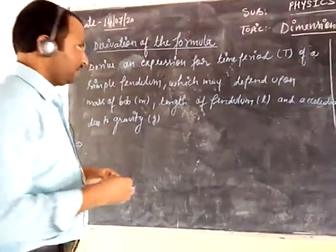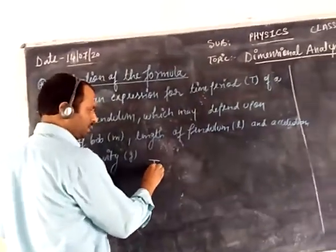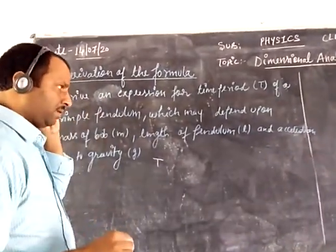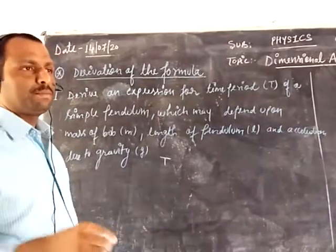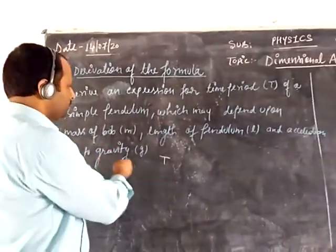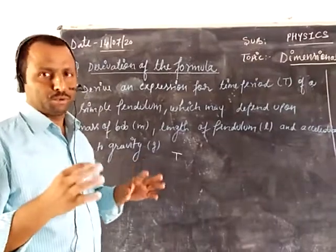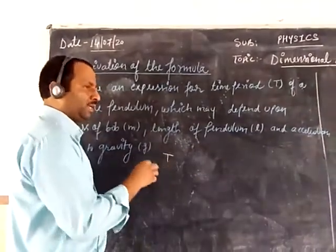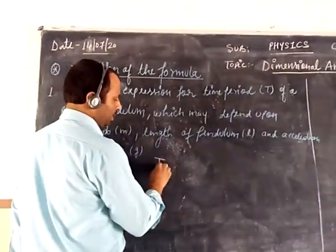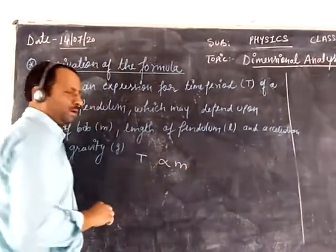How we will derive the formula? It is given in the question that the time period of a simple pendulum depends upon the mass of the ball. So we will assume that it will be directly proportional. Time period of a simple pendulum depends upon the mass of the ball.